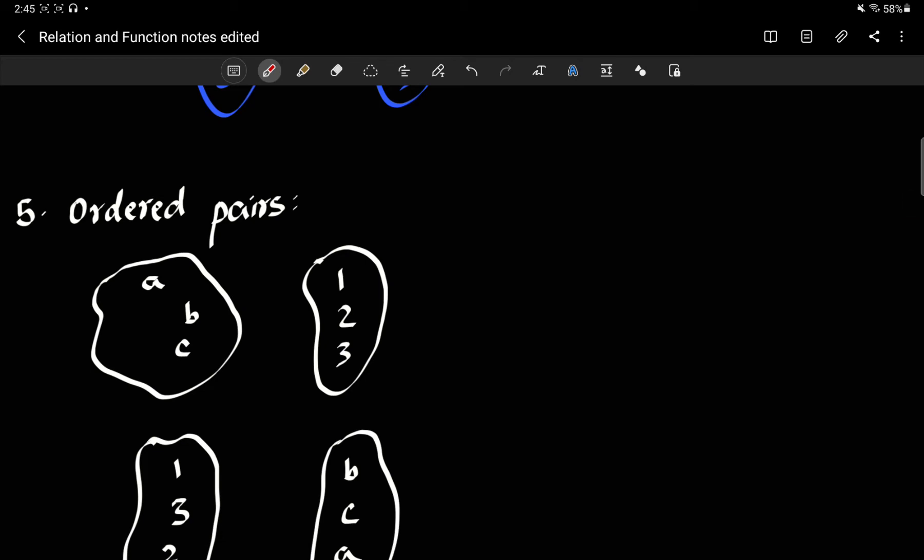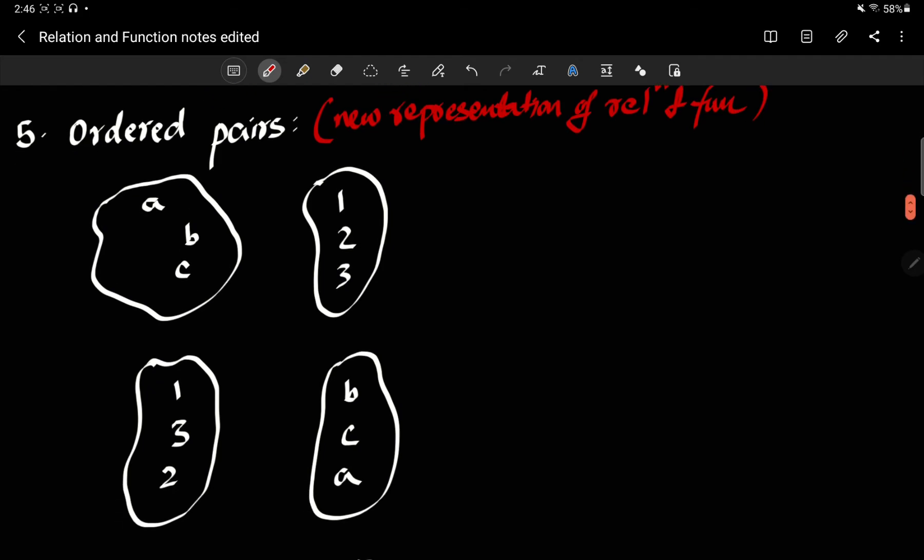This brings us to the idea of an ordered pair. So now we're moving on to, let's call this a new representation. This is a new representation of relation and functions. How is it new? First of all, this was our old representation, right, with pictures. Now let's say I draw these lines and I make them one, two, one, c, two, three.